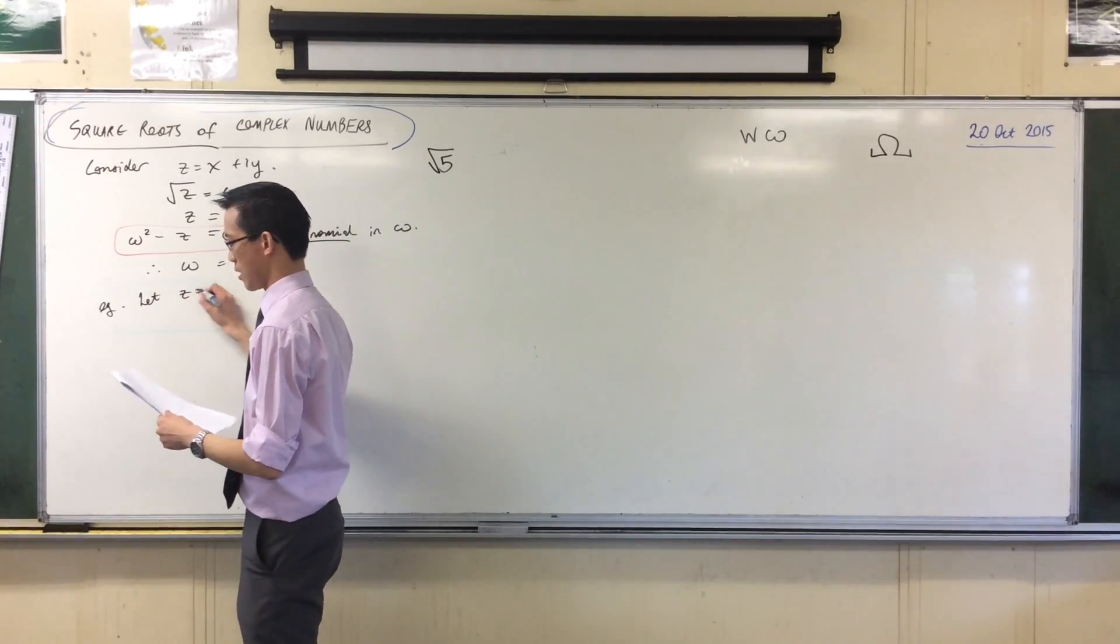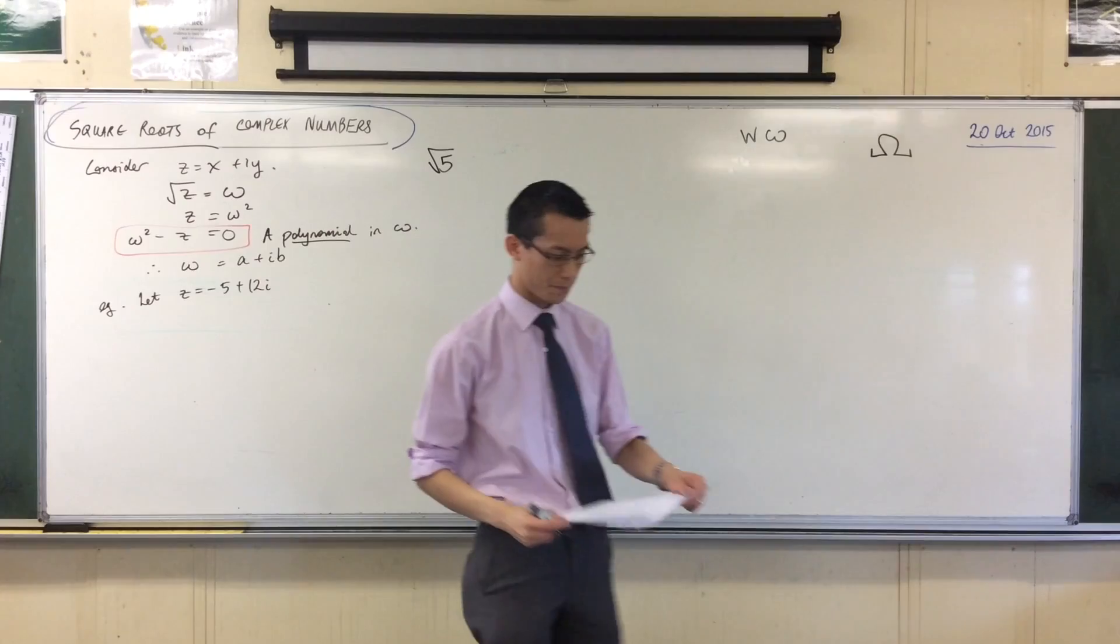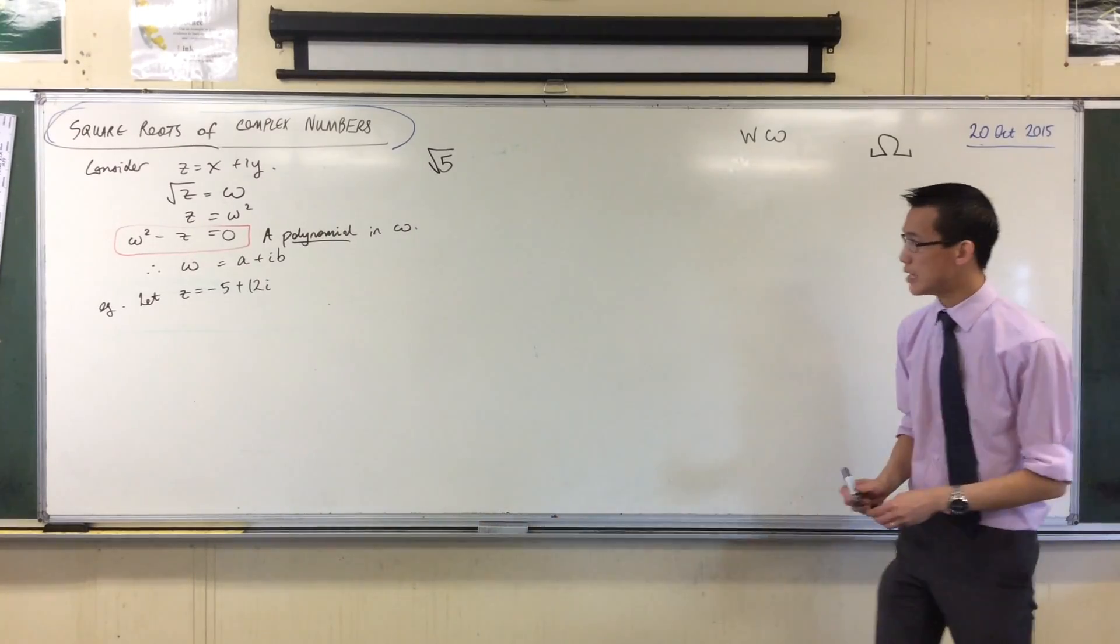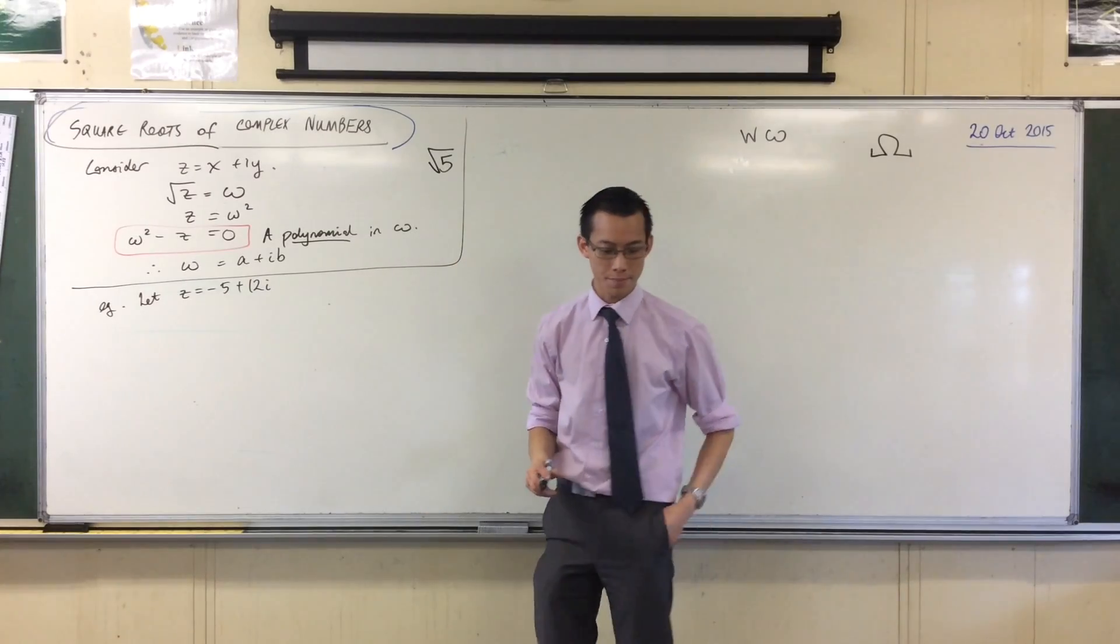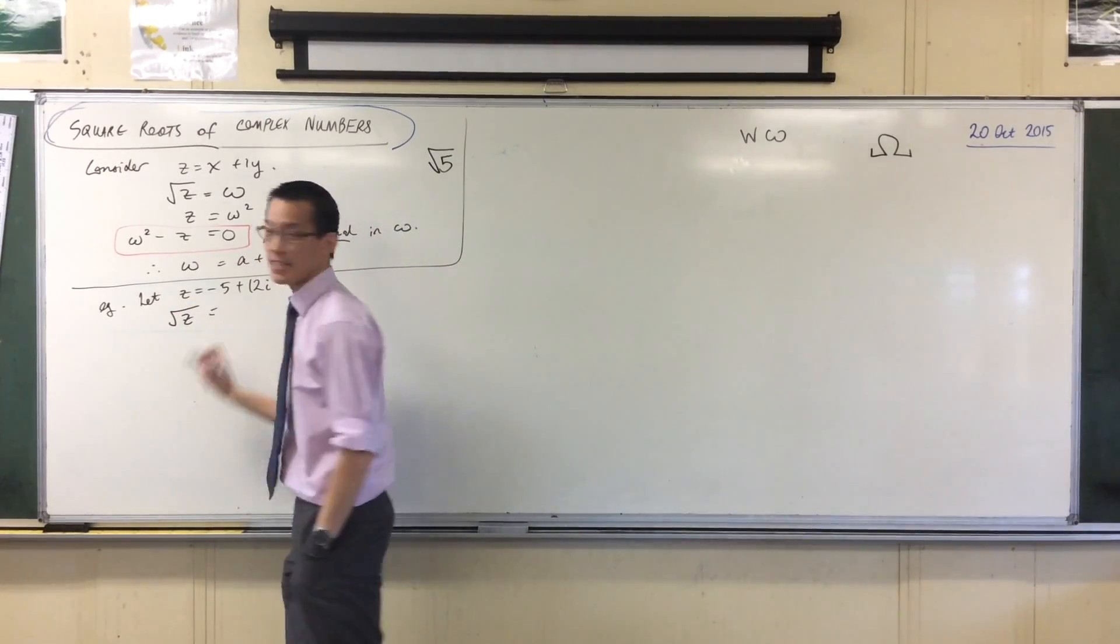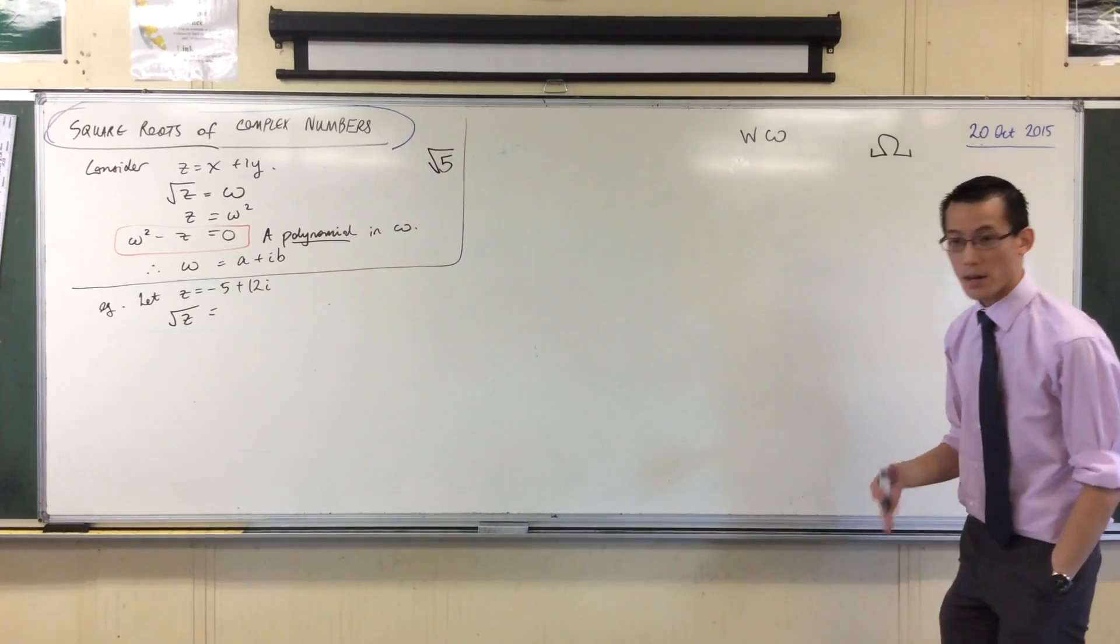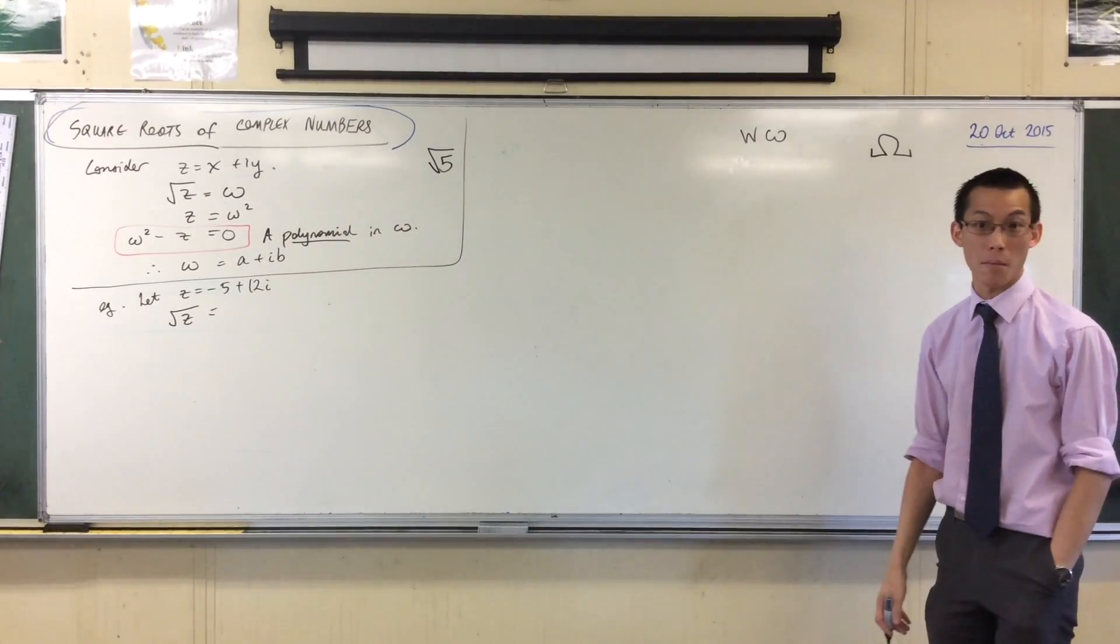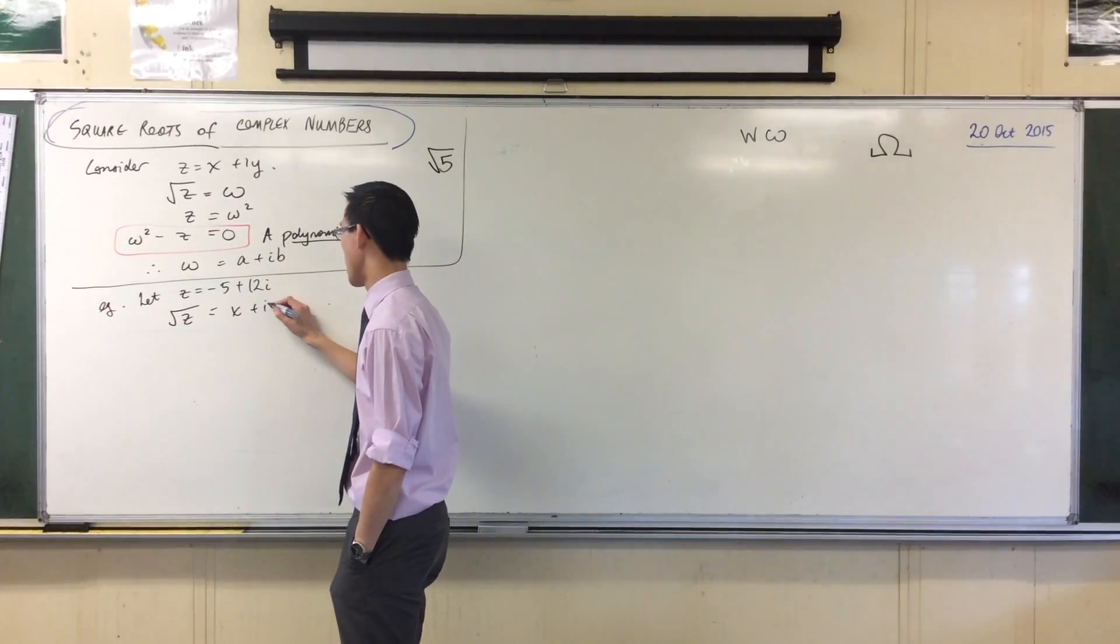Let z equal minus 5 plus 2i. So here's my example. This theory is what I needed to establish stuff up here. I'm going to say now, therefore, the square root of z, as I just established, if z is a complex number, the square root of z must also be a complex number. So I'm going to write it like this: x plus iy.